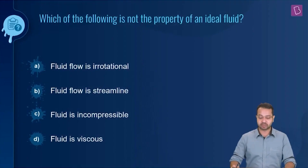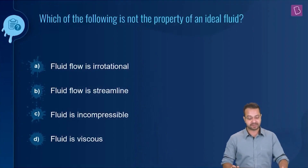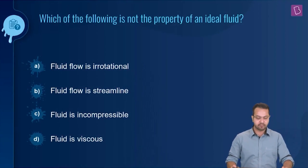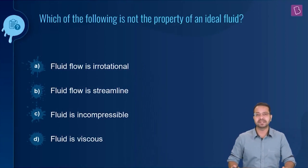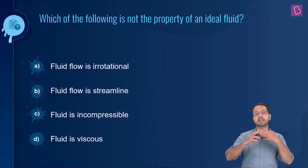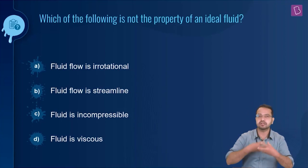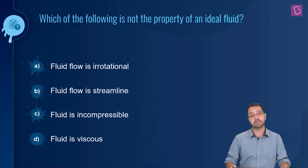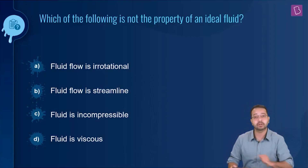Which of the following is not the property of an ideal fluid? Fluid flow is irrotational. Irrotational means that we don't consider any angular velocity in the particles of the fluid, and that is one of the assumptions that we take. We only take linear velocity of the particles.